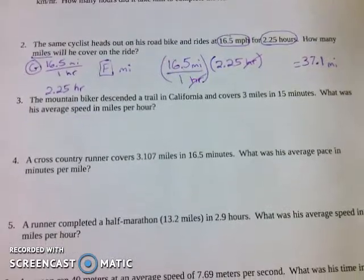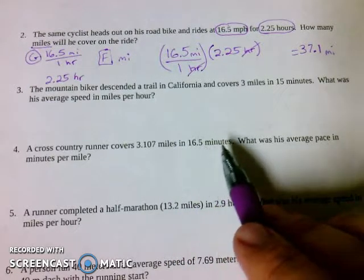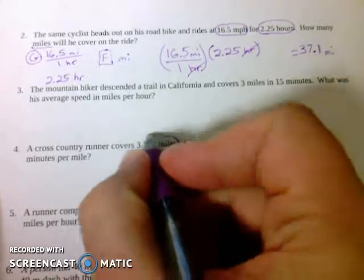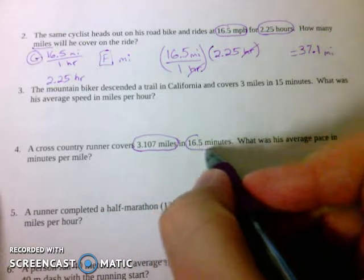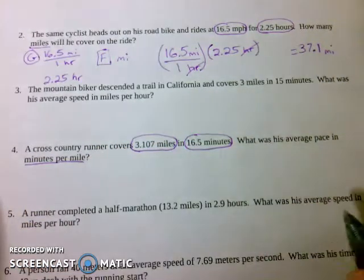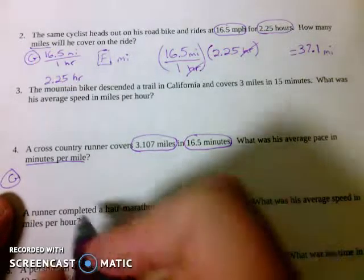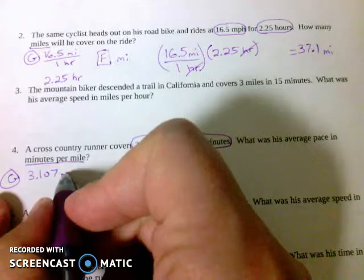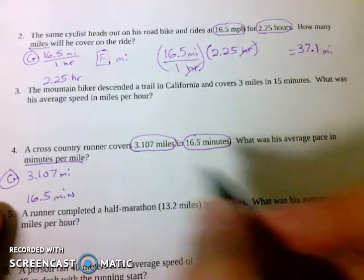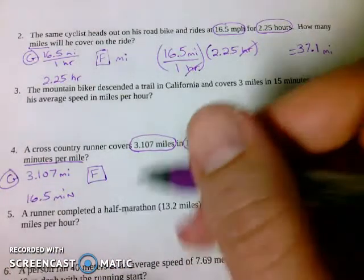Let's go down to number 4 here. Now we've got a cross-country runner. He's going to cover 3.107 miles, which is 5k, in 16.5 minutes. What was his average pace in minutes per mile? So this is a given. The distance he's going to run. The time it's going to take him to run. And then his pace is what we're solving for, which is minutes per mile. Circle our givens. Underline what we're trying to find. Write down a G for given. List your givens. 3.107 miles. And 16.5 minutes.